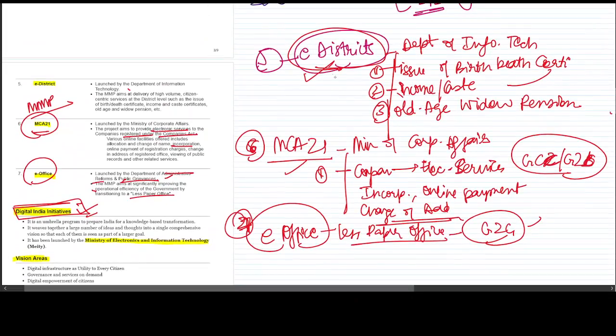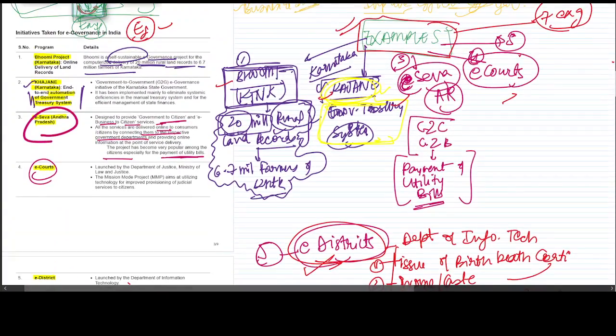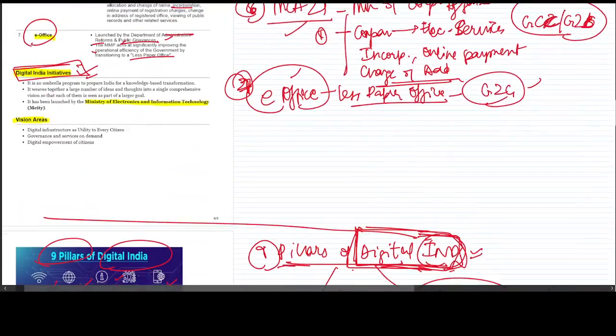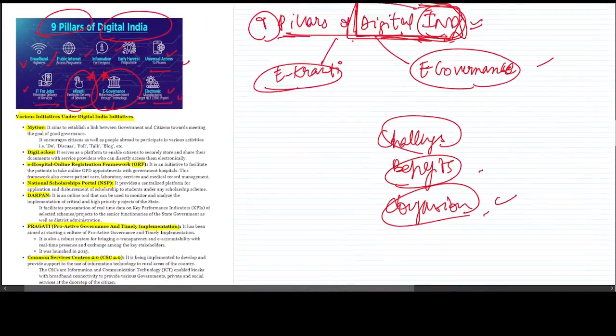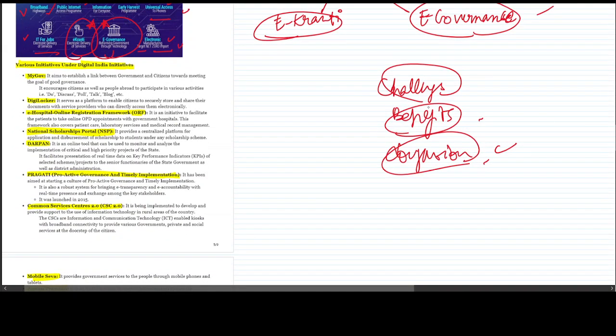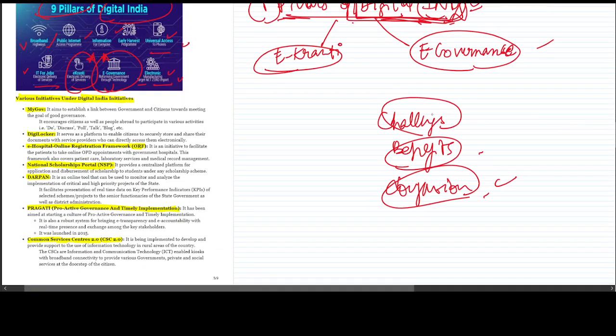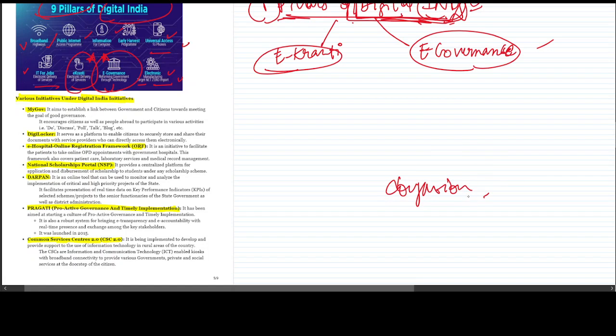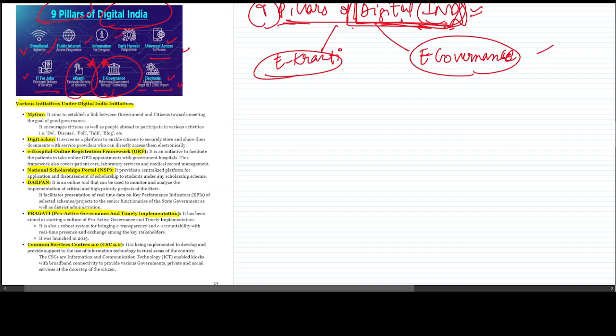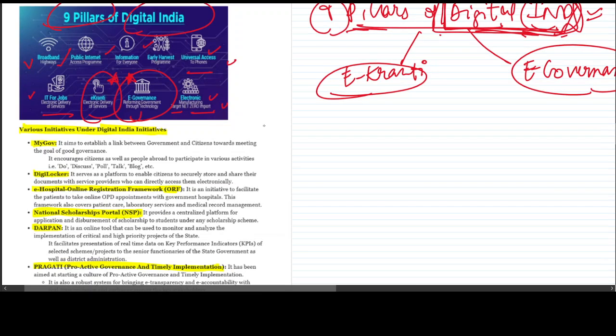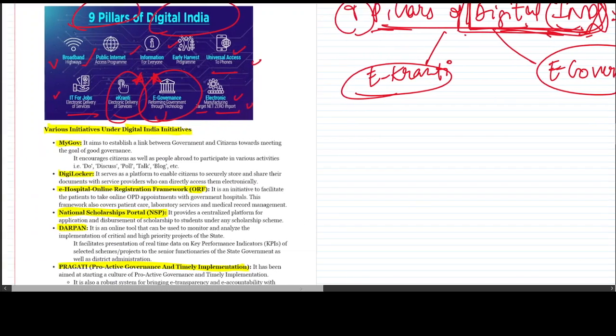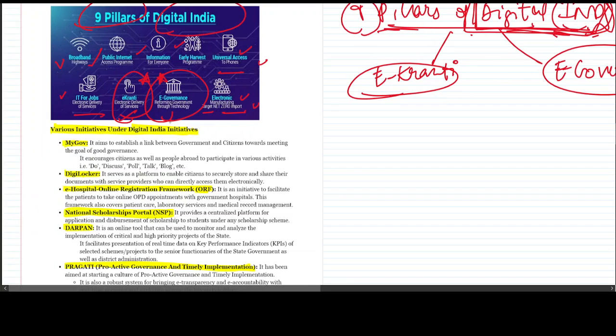The examples were MCA21, e-district, e-office, e-court, e-seva, khazane, and finally bhoomi project. Now we come to Digital India. Digital India is a very important thing to understand from e-governance perspective because this was the project that laid huge emphasis on e-kranti and e-governance.